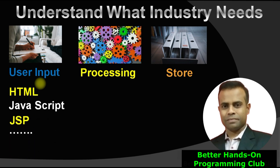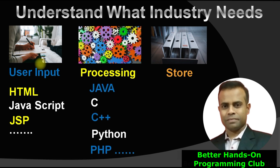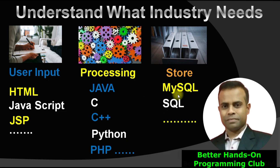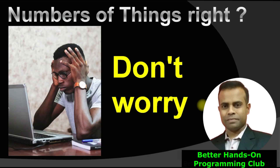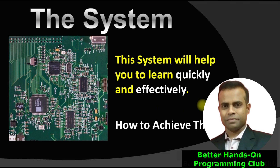User input is currently made in a computer with some technology and language, which we generally call HTML, JavaScript, or JSP. For the backend processing logic, we use languages like Java, C, C++, Python, or PHP. To store data in a database, we generally use languages like MySQL and SQL, and there are many more. So to fit into the IT industry, you have to learn these types of things. Don't worry — the system will help you learn quickly and effectively.